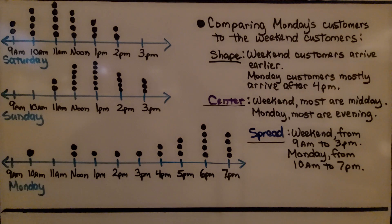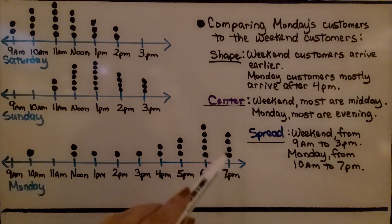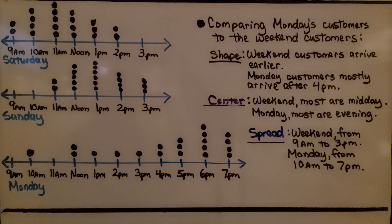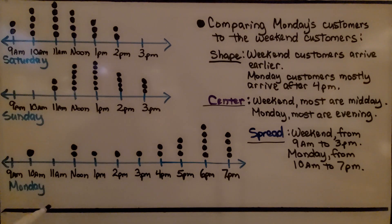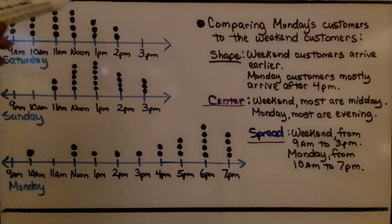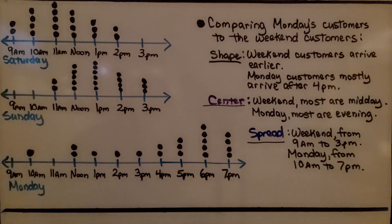For the center, on the weekend most are midday — around 11 or 12 o'clock, and Sunday is around 12 or 1 o'clock, so that's around midday. But for Monday, most are in the evening; the center is around 6 p.m. The spread on the weekend is from 9 a.m. to 3 p.m., but on Monday it's from 10 a.m. to 7 p.m. We can see the shapes: Saturday is mostly to the left, Sunday is mostly to the right, and Monday is fairly even and then clusters around the right side.